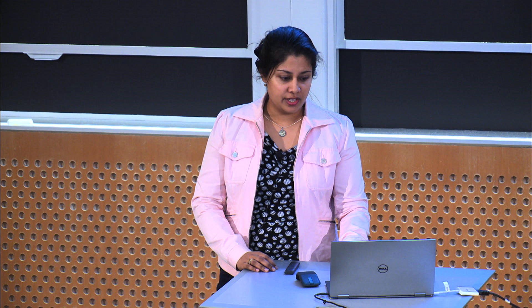There are a whole bunch of abbreviations when you read these reports. I highlighted a couple in red. You can make your way through guessing — thunderstorms is TS, that seems intuitive. But some really get you: hail is GR and mist is BR. If you look at it and think it's broken, no — broken is BKN. So they just try to trick you. Try to keep an eye on those and refresh your memory on these.